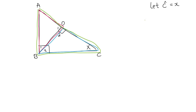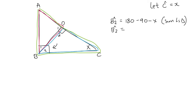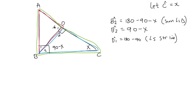Now you should try to find every single angle on this diagram. I'm going to start with angle B2. Angle B2 is equal to 180 minus 90 minus X — that's because of the sum of angles in the blue triangle — and that gives us B2 equal to 90 minus X. Now we can work out angle D1. Angle D1 is simply 180 minus 90 degrees, because of angles on a straight line, so D1 equals 90 degrees.